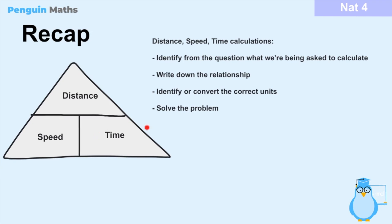Next, write down the relationship using the triangle. Then identify or convert the units needed to solve the problem — identify the units for the variable you're solving for, and convert units from the information given in the question as needed. Finally, once everything is in the correct form, simply solve the problem to get the right answer for either the distance, the speed, or the time.